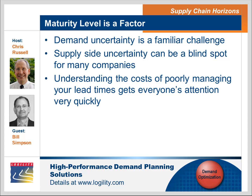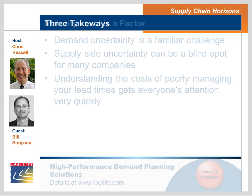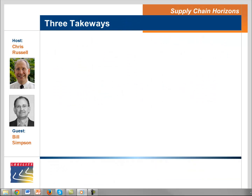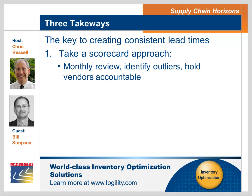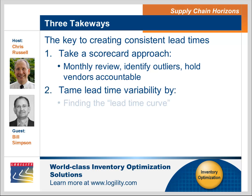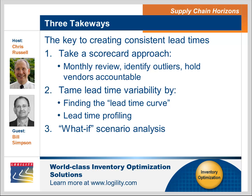Thank you so much for sharing with us today — this is an important topic. So what are my three takeaways? The goal is to create consistent lead times. One: take a scorecard approach — monthly review, identify outliers, hold your vendors accountable. Two: tame lead time variability by finding the lead time curve, doing lead time profiling, and putting numbers around that variability. And three: perform what-if scenario analysis. Instead of taking lead times and variability at face value, figure out what the impact of that variability is, especially in a time-phased manner to match your seasons and new product introduction curves.